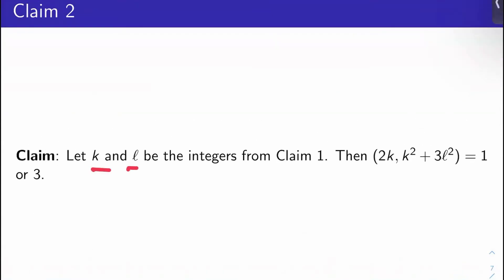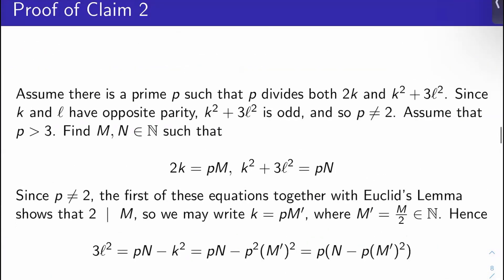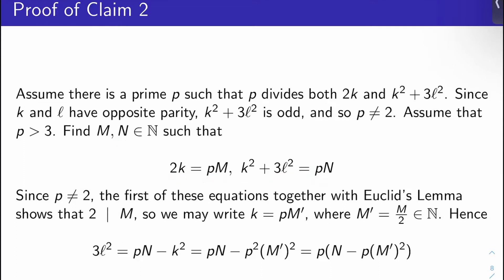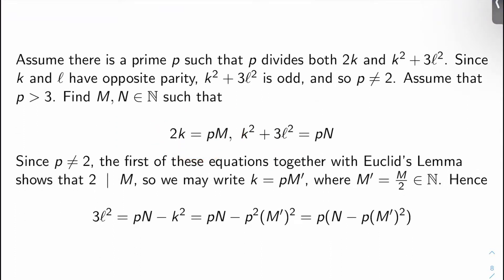Claim 2: Let K and L be the integers from Claim 1. Then the GCD of 2K and K squared plus 3L squared is 1 or 3. Let's prove this. Assume there's a prime P such that P divides both 2K and K squared plus 3L squared. Since K and L have opposite parity, K squared plus 3L squared must be odd, so P cannot be 2. Let's assume P is bigger than 3 and derive a contradiction.